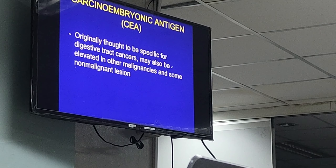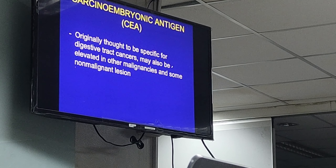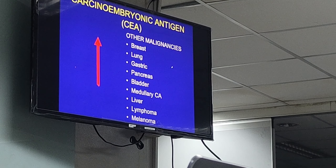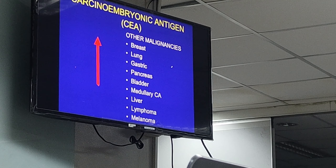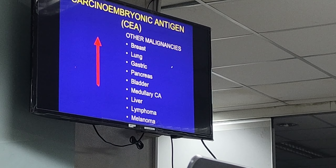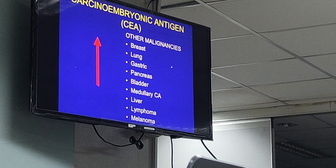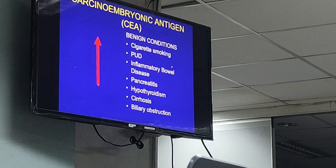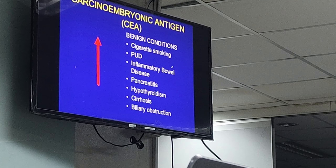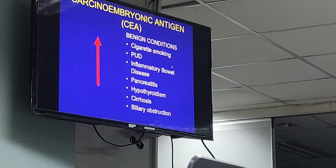CEA was originally thought to be specific for digestive tract cancers. However, it was discovered that it can also be elevated in many types of malignancies outside of the GI tract — including tumors from the breast, lung, gastric, pancreas, bladder, thyroid medullary carcinoma, liver, lymphomas, and even melanomas. Even benign conditions can cause elevations, such as cigarette smoking, peptic ulcer disease, IBD, Crohn's and ulcerative colitis, pancreatitis, hypothyroidism, liver cirrhosis, and biliary obstruction.